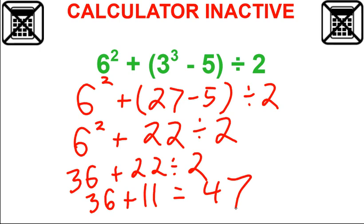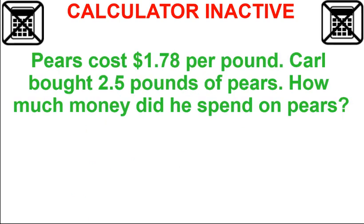Any questions on that? The other types of problems you can see, we got multiplication. We got pears. In this case, cost is $1.78 per pound. Carl bought two and a half pounds of pears. How much money did he spend on pears?